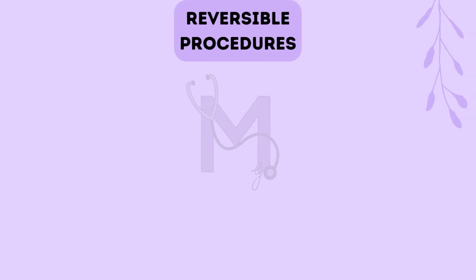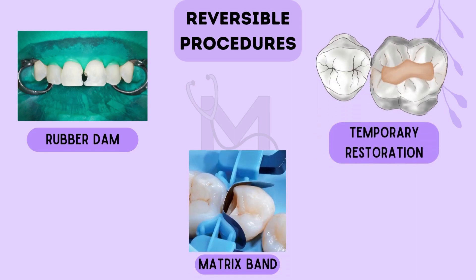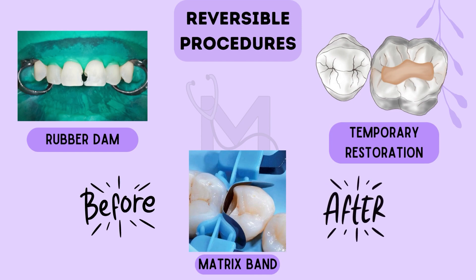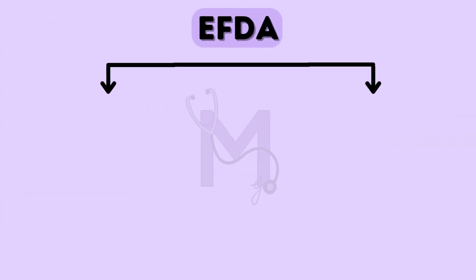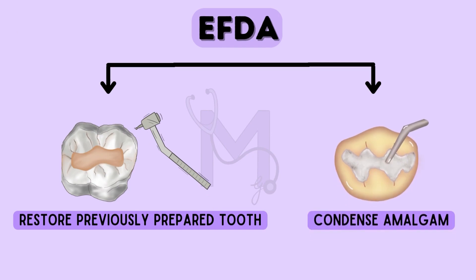The reversible procedures that we spoke about could include procedures like placing and removing rubber dams, temporary restorations, as well as placing and removing matrix bands before and after restoring a cavity. An EFDA can also restore a previously prepared tooth and condense and carve the amalgam placed into the prepared cavity.